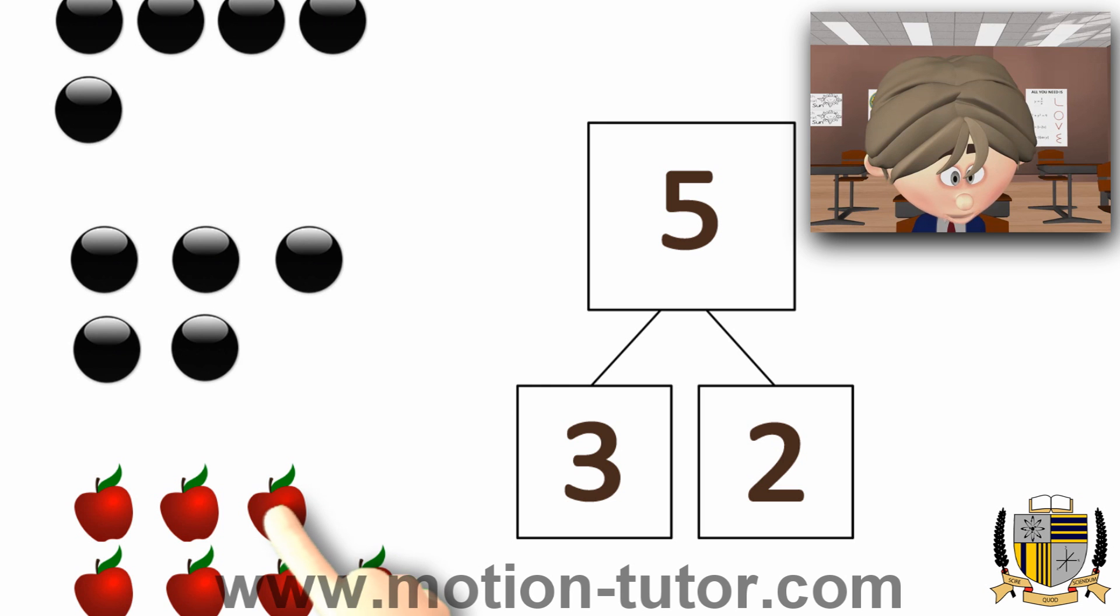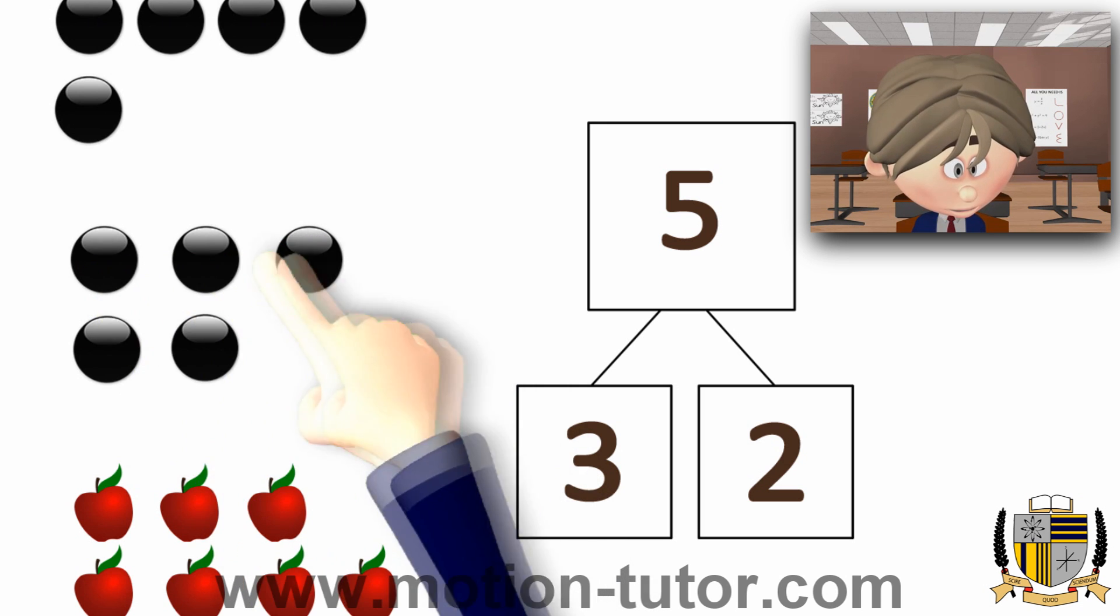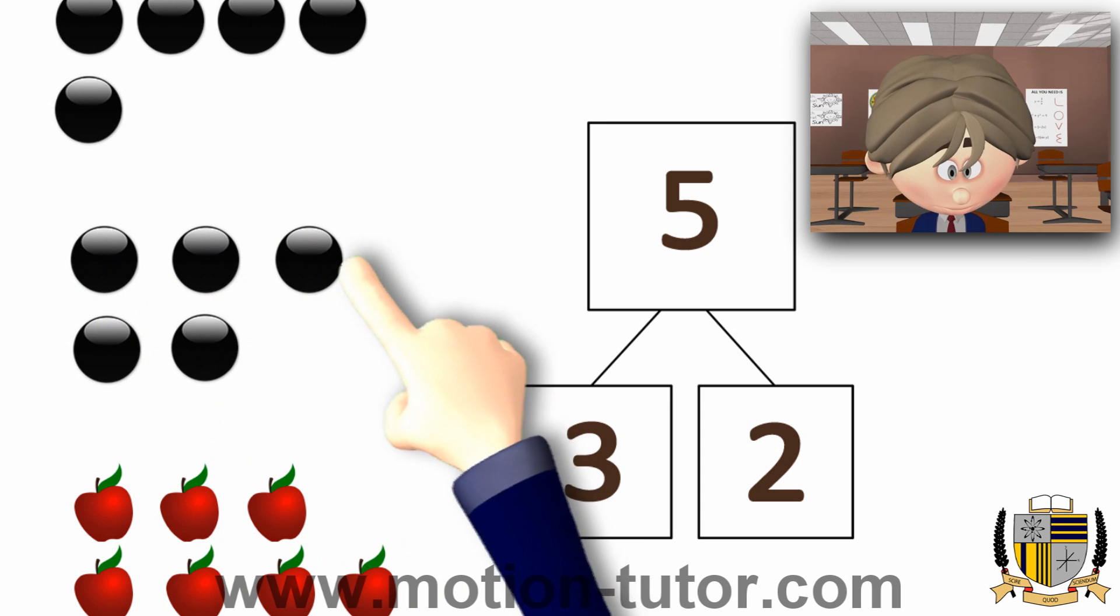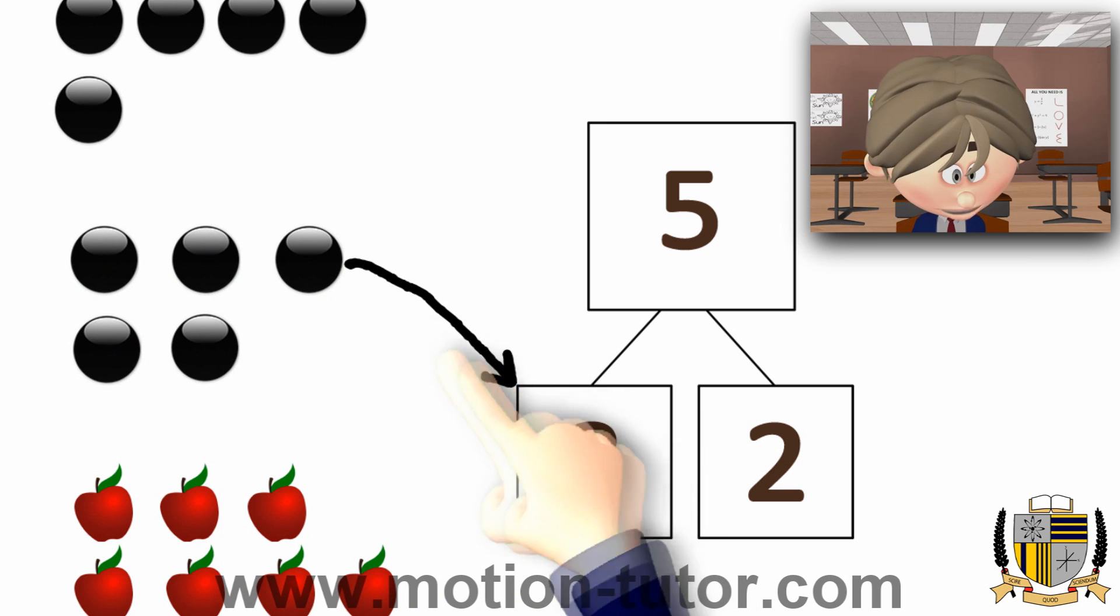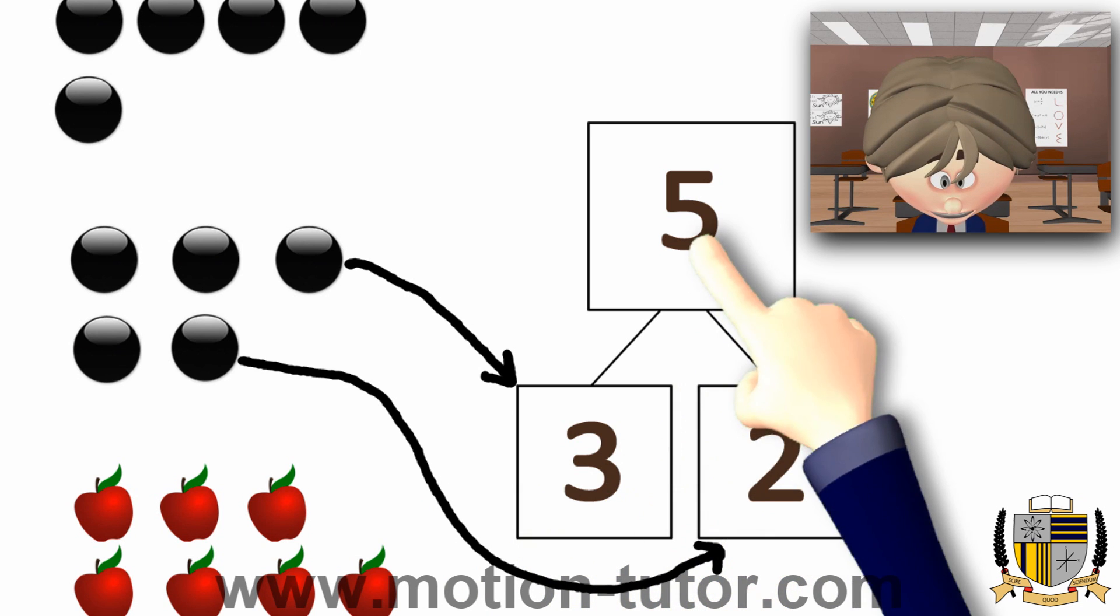So, which one matches? I'm sure you guys see it. This is the one that matched. Because you have 3 that's going to go over there and the 2 goes over here. And together, they're 5.